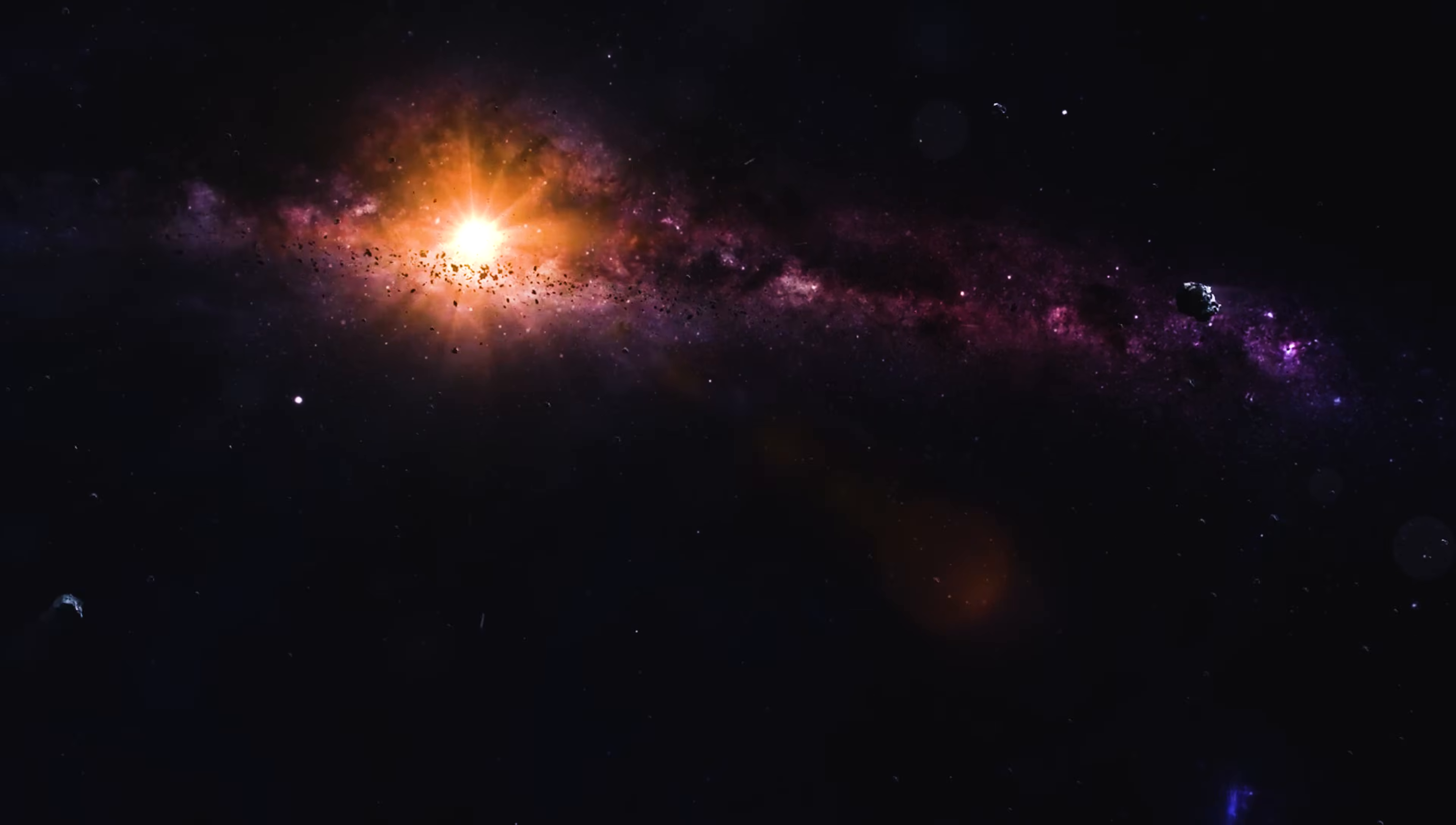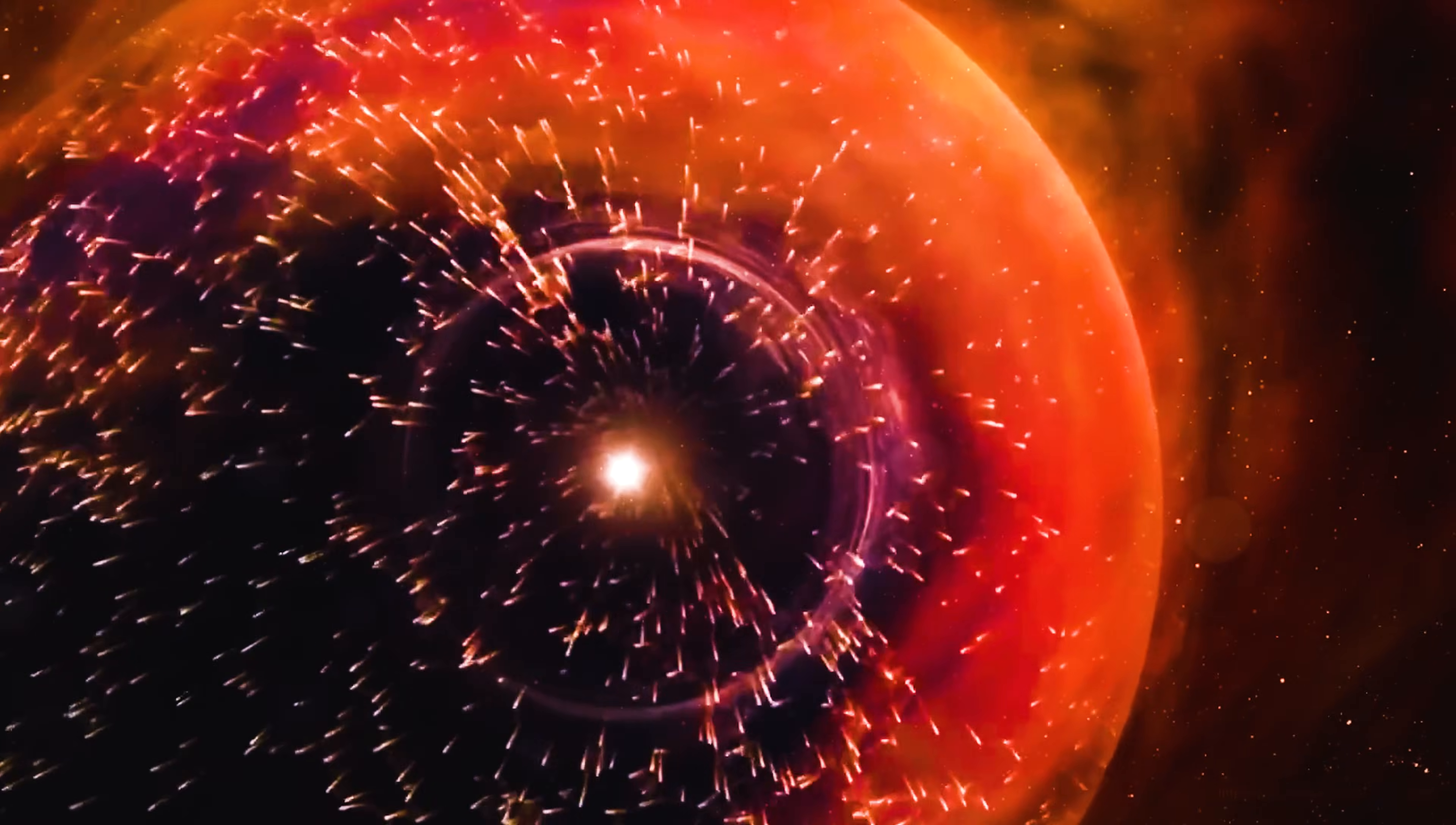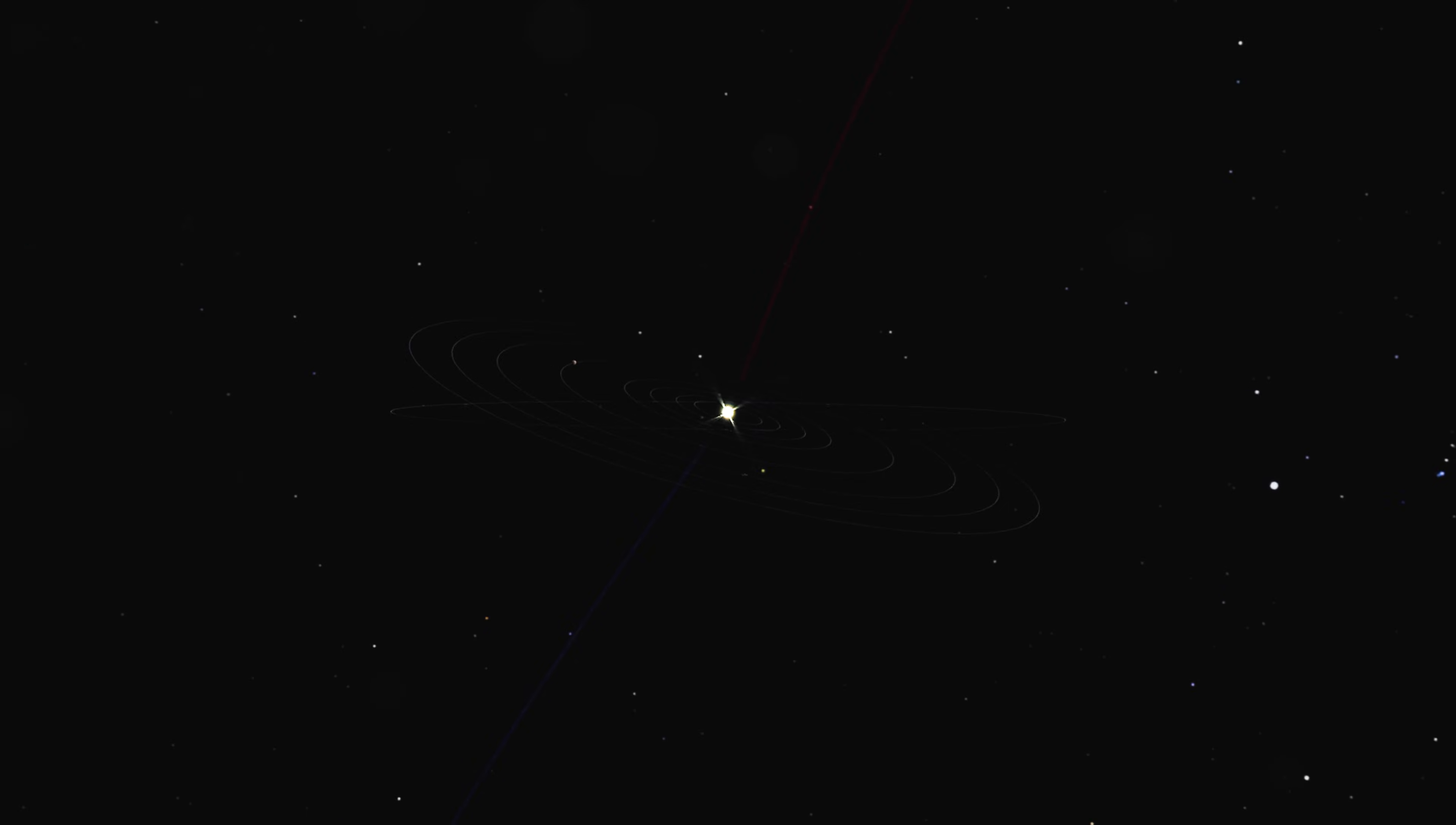Outside the sun's bubble, both voyagers detected something completely unexpected. A region of extraordinarily hot plasma, tens of thousands of degrees, but not the kind of heat that burns. The density is too low. Instead, individual particles are racing through space at incredible speeds. This hot layer is forged from the collision between the solar wind, which has traveled outward for billions of kilometers, and the gas that fills the galaxy. Two colossal forces grinding against each other at cosmic scale. The results are wild compression, heating, twisting magnetic fields, shock waves, extreme turbulence where models predicted calm emptiness.